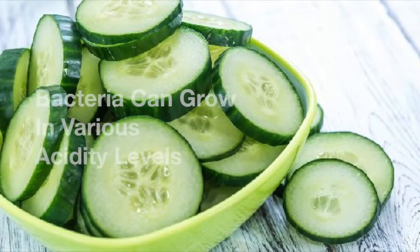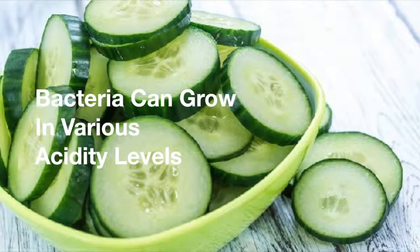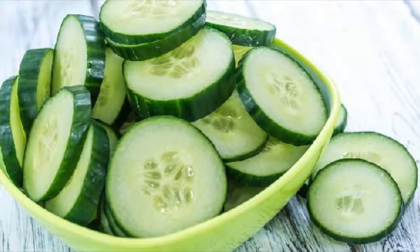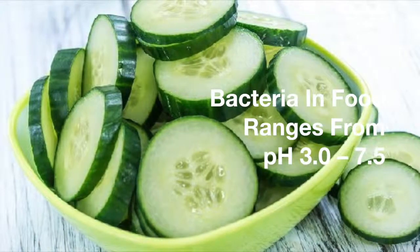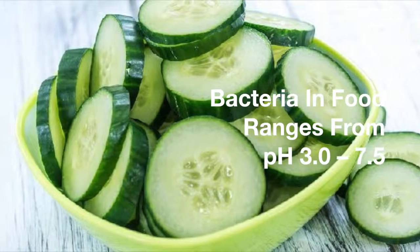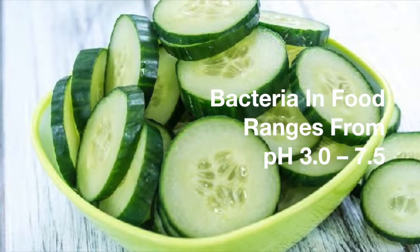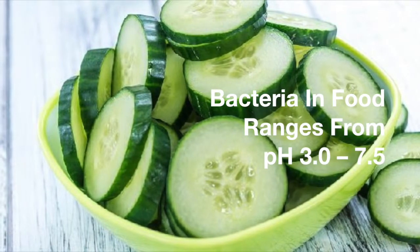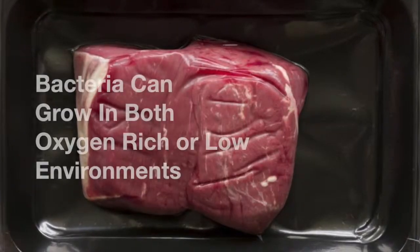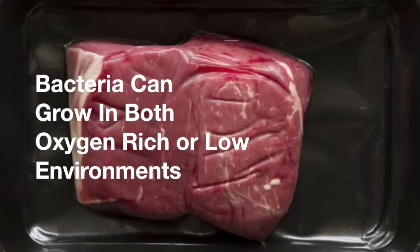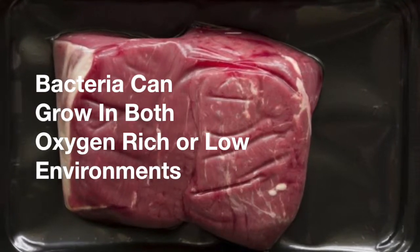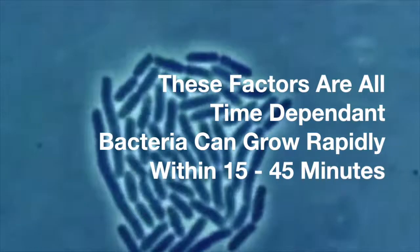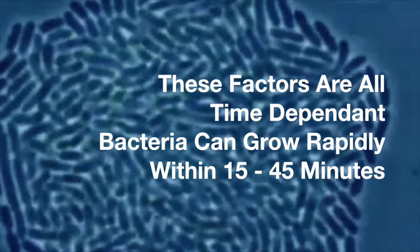The pH or acidity level also affects how bacteria grows and how effectively bacteria are able to survive. Within the environment, bacteria in food ranges from 3 to 7.5 pH. Bacteria can grow in both oxygen-rich and poor environments, meaning both sealed and unsealed products. These factors are all dependent on time, and bacteria can rapidly grow within 15 to 45 minutes.